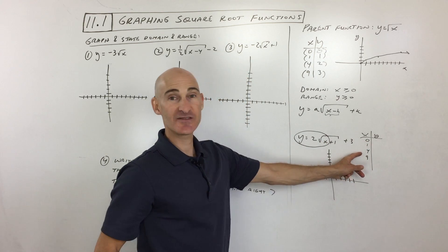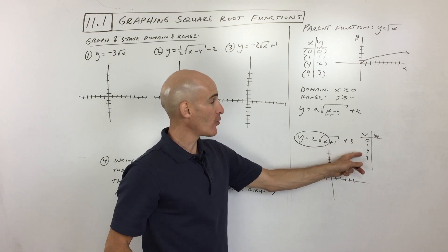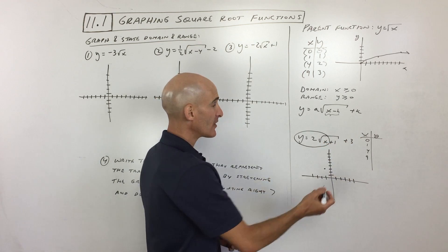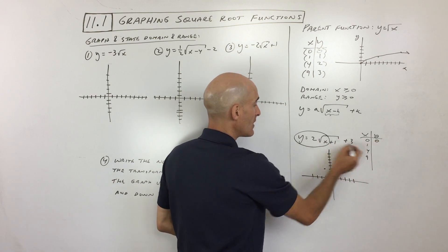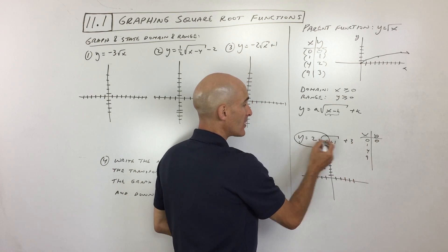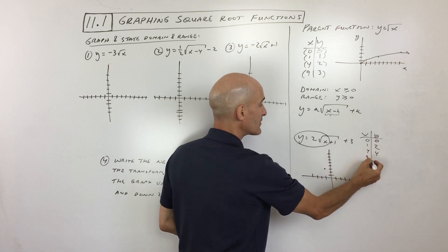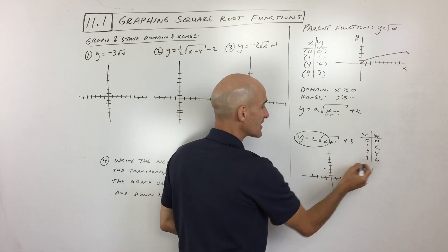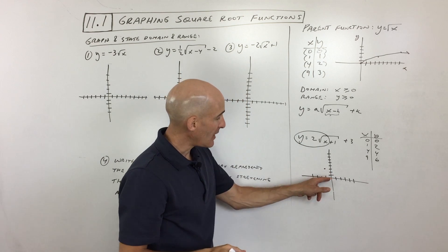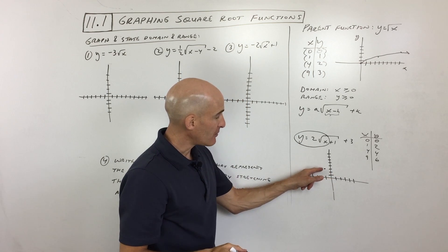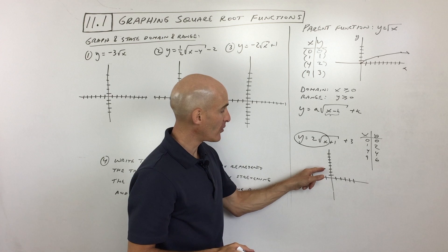I like to make a table using the parent function, picking values zero, one, four, and nine — because it's easy to take the square root of those and get nice integers. Square root of zero is zero times two is zero; square root of one is one times two is two; square root of four is two times two is four; square root of nine is three times two is six. The key is to plot these from the shifted origin — left one, up three — not from the original origin, since everything shifts left one and up three.